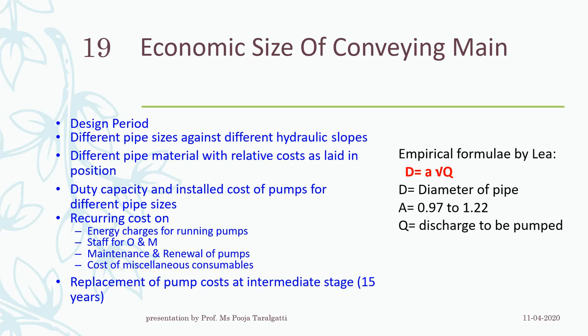Fifth: recurring costs related to operation and maintenance — energy charges for running the pumps, maintenance and renewal of pumps, and the cost of consumables. Also, the replacement of pump cost at intermediate stages: generally pumps are designed for 15 years while pipelines and other equipment are designed for 30 years. Because pumps work 24 hours with frequent open-and-shut cycles, their lifespan is reduced, so the design period for pumping systems is considered 15 years, while the pipeline design period is 30 years.